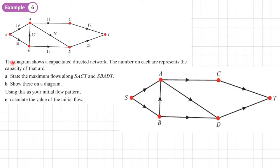Example 6. The diagram shows a capacitated directed network up here. The number on each arc represents the capacity of that arc. Part A, what we need to do is to state the maximum flows along SACT and then SBADT.